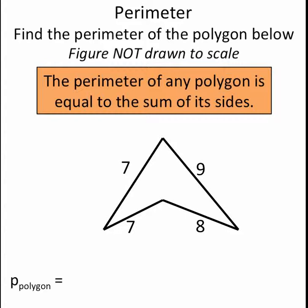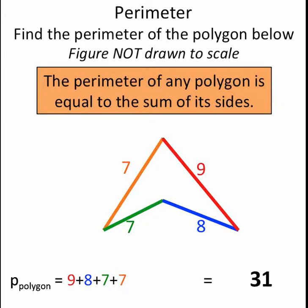So the perimeter of this polygon is equal to 9 plus 8 plus 7 plus 7. Add all those up and I get 31. So the answer is the perimeter of this polygon is 31.